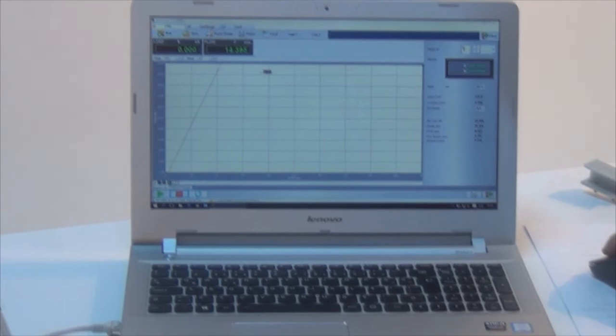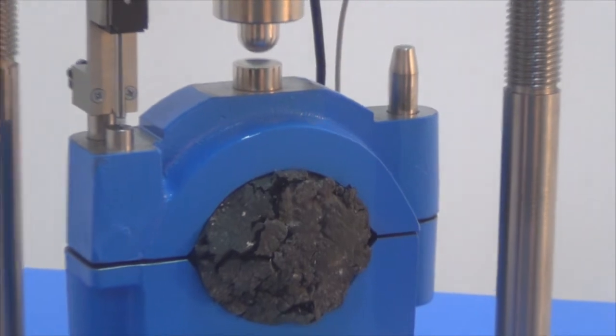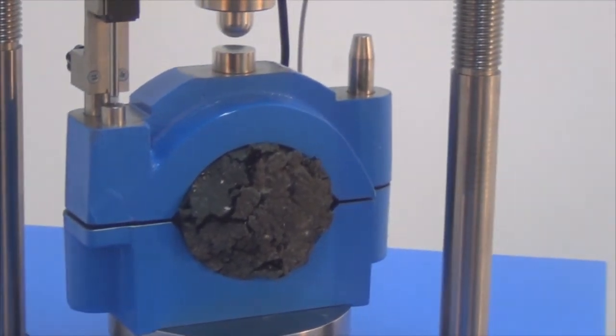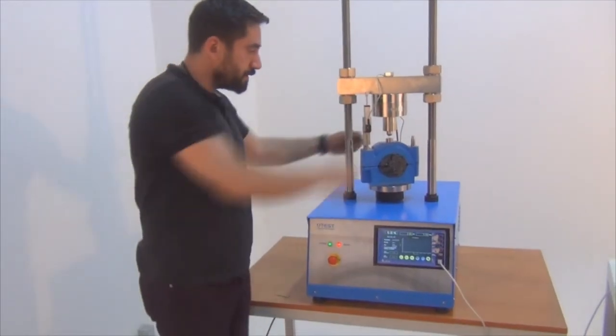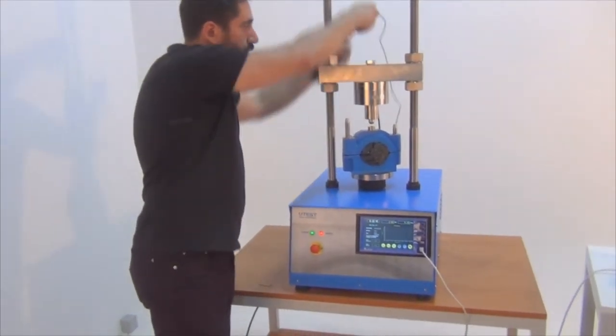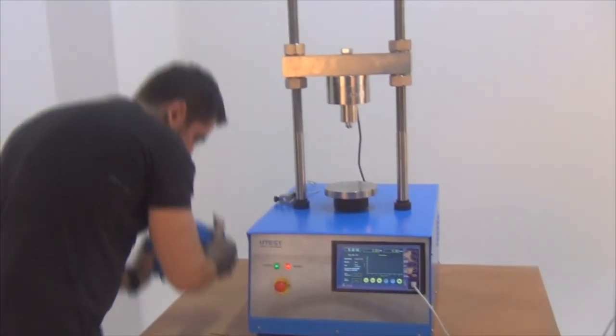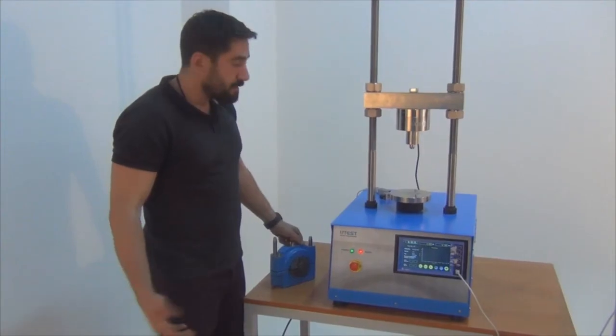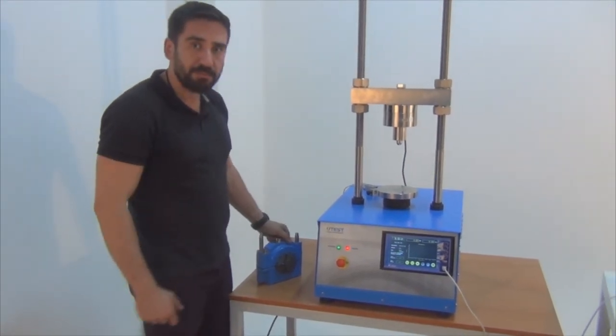After the test is finished, press the return button to make the piston return to the home position. After finishing this first step, you can remove the LBDT and the molds. This is how we conduct CBR and Marshall tests using the multiplex device.